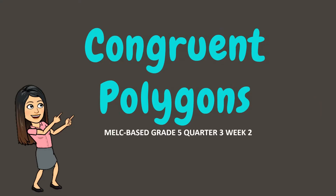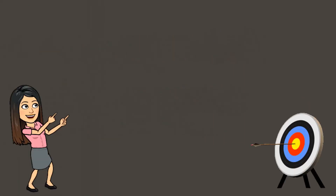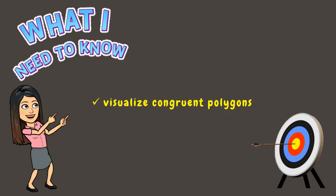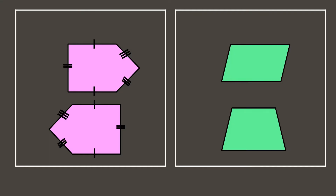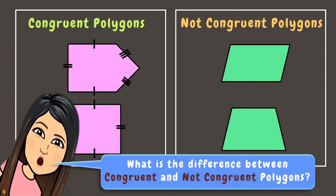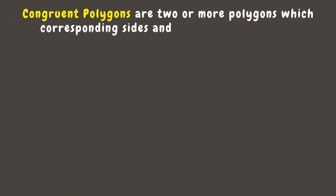Welcome back to the classroom. For today's lesson, you will learn how to visualize congruent polygons. Let's begin. Let's take a look at these two pairs of polygons — what can you observe? The first set of polygons are congruent polygons, while the second one are not congruent polygons. Can you tell the difference between congruent and not congruent polygons? Let's find out.